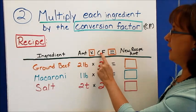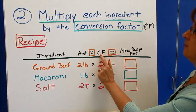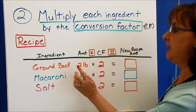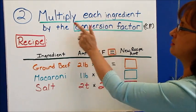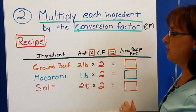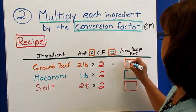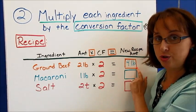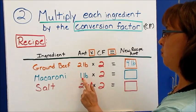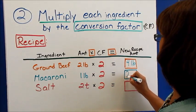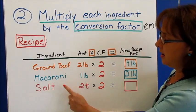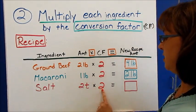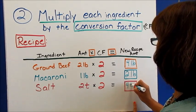Our conversion factor — CF — is two, as we figured out. We take each ingredient and multiply it by the conversion factor. Two pounds times two gives us four pounds. Always remember you must include your units. One pound of macaroni times two gives two pounds. And two teaspoons of salt times two — two times two is four — so that gives us four teaspoons.